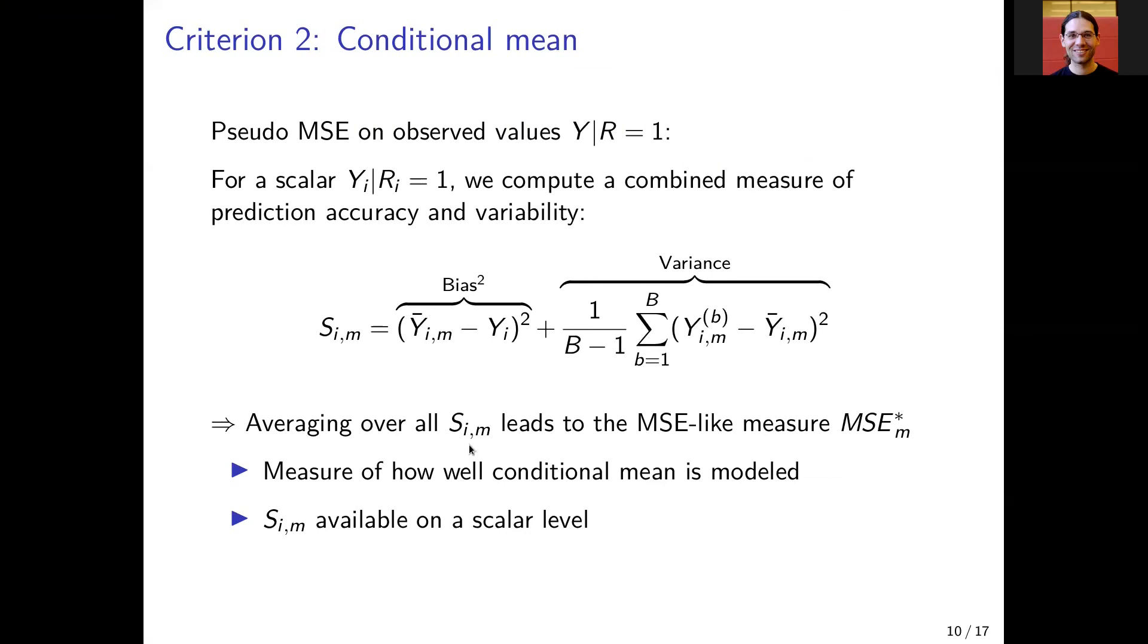Averaging overall, the SIMS for the scalars leads to the MSE-like measure for a method M. This is representing how well the conditional mean is modeled.